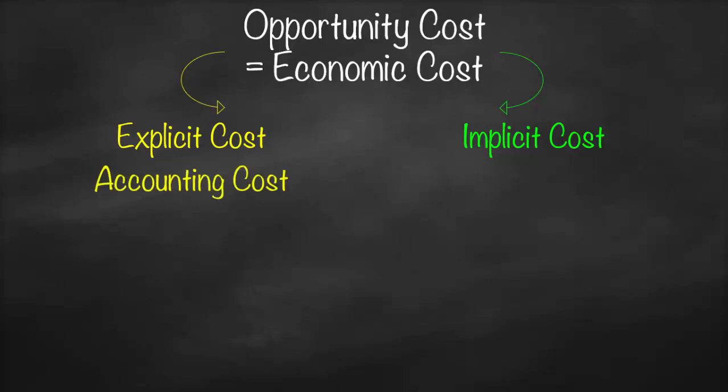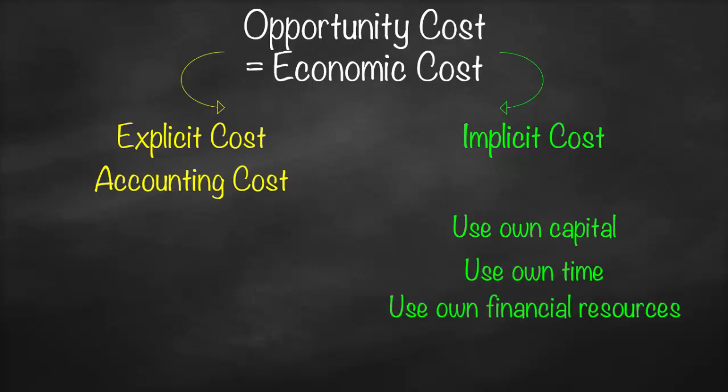Explicit cost refers to all the costs directly related to your project. Implicit cost refers to the cost of the second best alternative — meaning if you're going to use your own capital, your own time, your own financial resources. For example, if you have land and you'd like to use your own land for a project, this is called the opportunity cost, or the implicit cost.